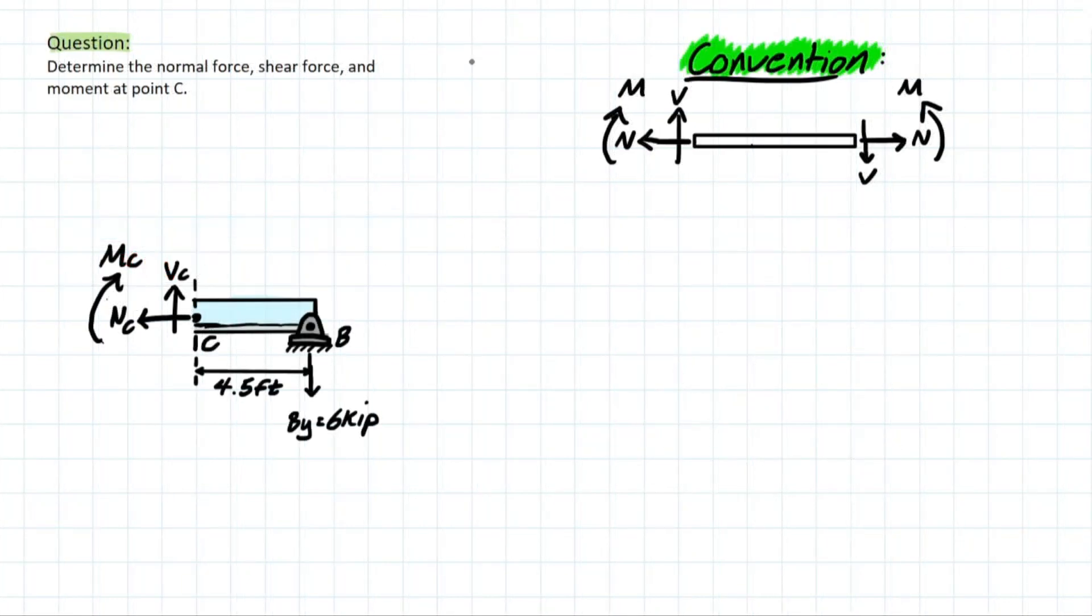So now we've taken the cut at the member and we can see we're following our convention here. We have our axle or normal force here, our shear force, and our moment created all at cut C. And we have our reaction solved from before. So this is a pretty simple section that we've taken, which makes our lives a lot easier to solve for each of these forces. We can see that NC is going to equal zero because there's no other X components in this problem.